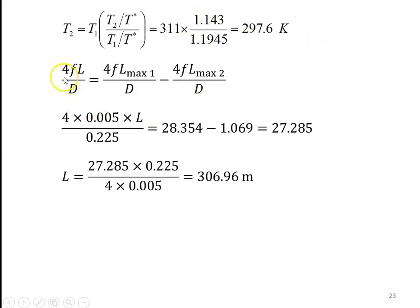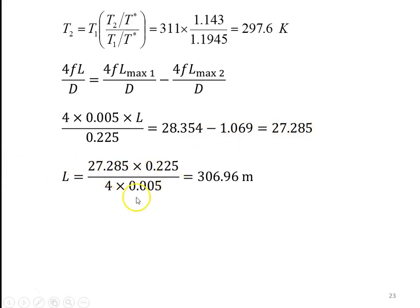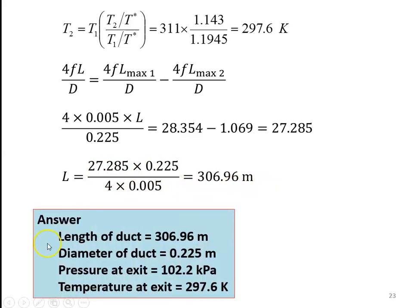Using the equation 4FL by D equal to (4FL max 1 by D) minus (4FL max 2 by D), and substituting: 4 into 0.005 into L divided by 0.225 equal to 28.354 minus 1.069, equal to 27.285. So length equal to 27.285 into 0.225 divided by 4 into 0.005, equal to 306.96 meters. Answer: length equal to 306.96 meters, diameter equal to 0.225 meter, exit pressure equal to 102.2 kPa, exit temperature equal to 297.6 Kelvin.